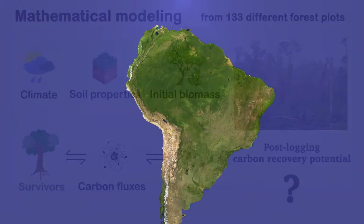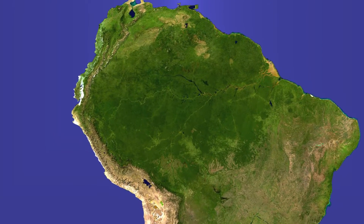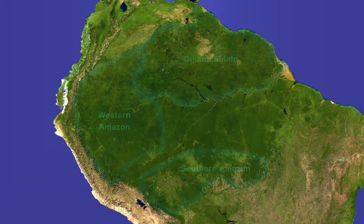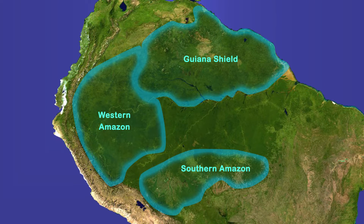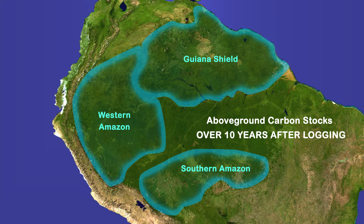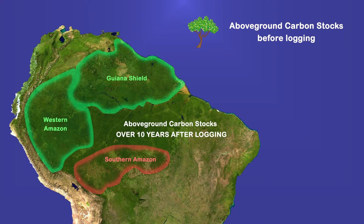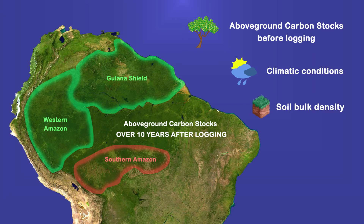The models show that the forest's ability to recover carbon after selective logging greatly differs between Amazonian regions. The net above-ground carbon stocks over 10 years is higher in the Guiana Shield and in the western Amazon than in the southern Amazon. These variations are explained by the above-ground carbon stocks of each site before disturbance, the regional climatic conditions, and soil bulk density.